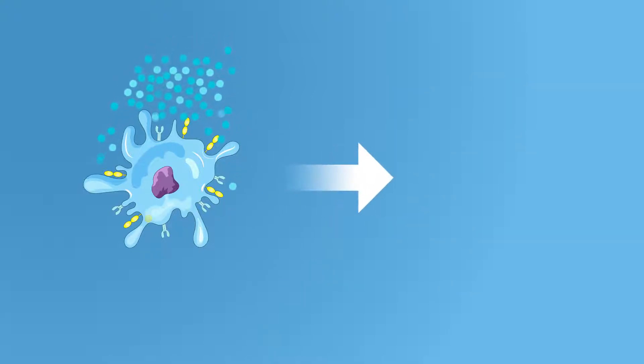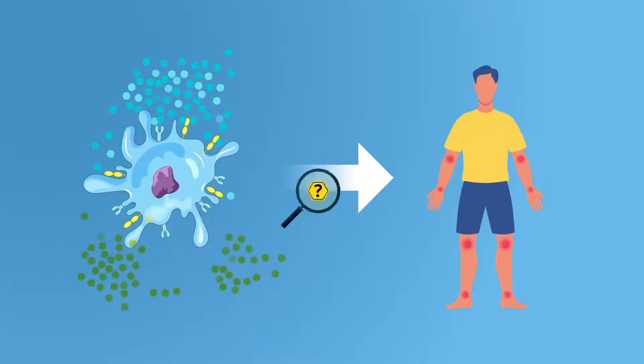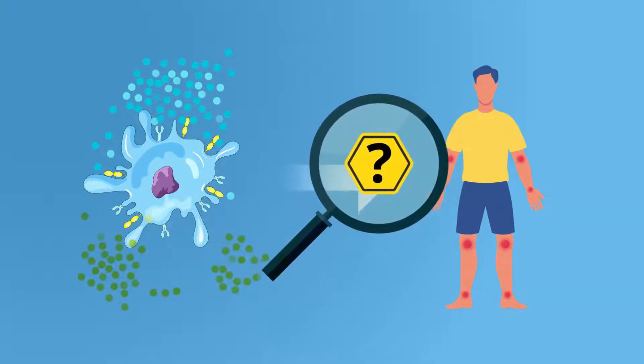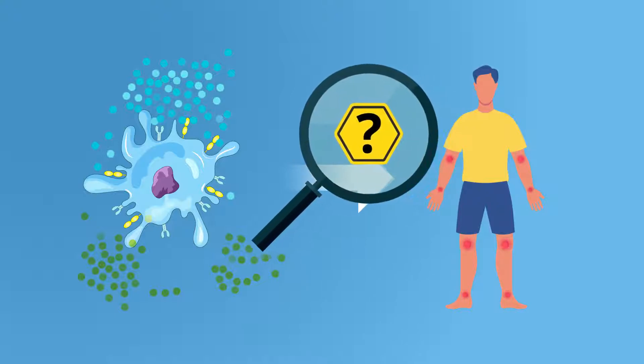TARM1's functions suggest that it could play an important role in the immune response, but its role in the pathogenesis of rheumatoid arthritis remains unexplored.